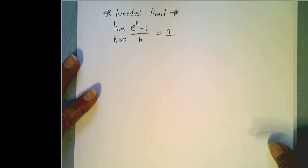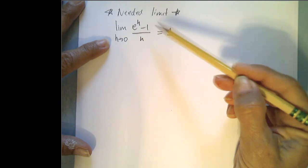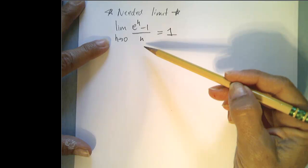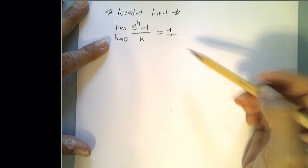now in order to find the derivative of e to the x algebraically, we need a particular limit. The limit as h goes to 0 of e to the h minus 1 all over h is equal to 1, and you can explore that graphically or numerically to see that.